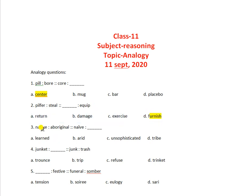Question 3: native, aboriginal, and navi. Native is a synonym for aboriginal, and navi is a synonym for unsophisticated. So the answer is C part, that is unsophisticated.